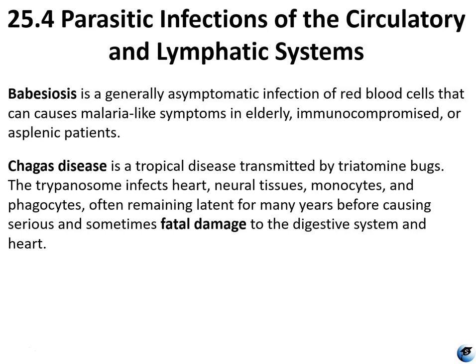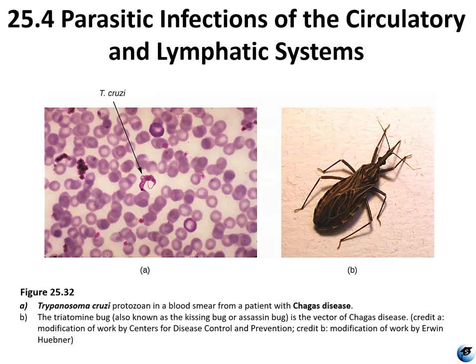Chagas disease is a tropical disease transmitted by triatomine bugs; trypanosome infects the heart, neural tissues, monocytes, and phagocytes, often remaining latent for many years before causing serious and sometimes fatal damage to the digestive system and heart. The vectors are currently only found in the Americas, primarily in Latin America. It is estimated that 8 to 11 million people in Mexico, Central America, and South America are infected, with most not knowing they are infected. It is a lifelong infection and can be life-threatening if not treated. Figure 25.32 shows the Trypanosoma cruzi protozoa in a blood smear from a patient with Chagas disease, alongside the triatomine bug — also known as the kissing bug or assassin bug — which is the vector.